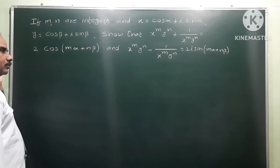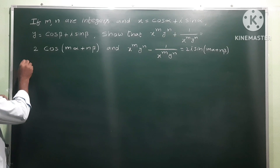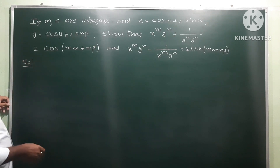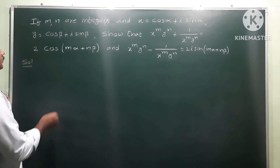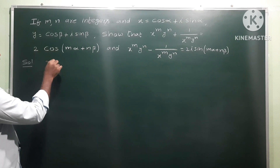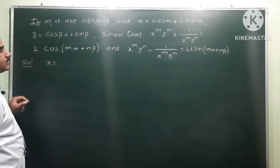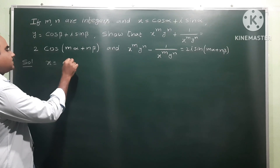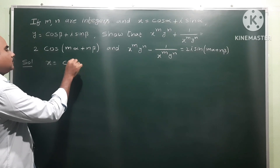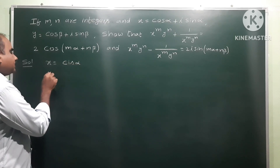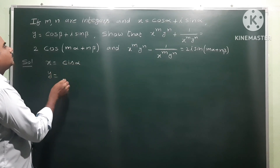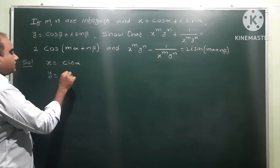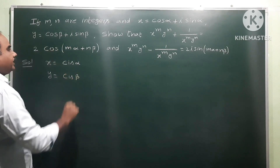So, this is the solution. x is equal to cos α plus i sin α, that means cis α. y is equal to cos β plus i sin β, that means cis β.